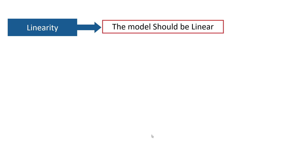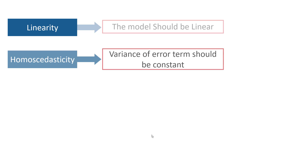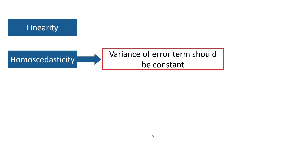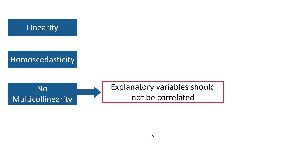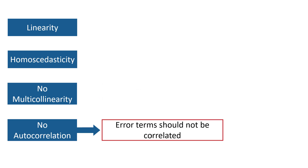So let's explore these regression assumptions. Let me first list down these assumptions, then we will explore each of them in detail. The first assumption is linearity — it says that the model should be linear in parameters. Then we have the homoscedasticity assumption, which states that the variance of error term should be constant. The no multicollinearity assumption states that the explanatory variables should not be correlated with each other. No autocorrelation — that is, the error term should not be correlated with other error terms, and this assumption is mostly important for time series data.